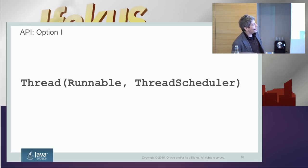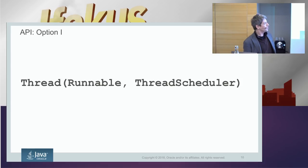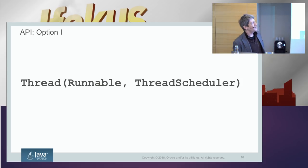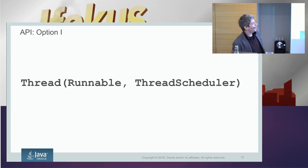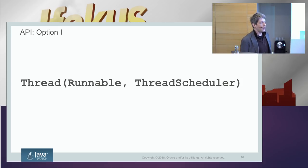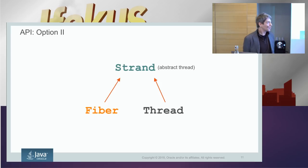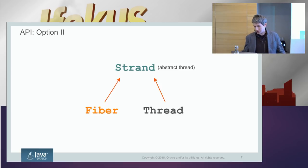We're adding a new kind of thread. One option is to reuse the existing Thread class — and in fact that's the one we're currently leaning towards. If you create a new thread as you normally do today, you get an ordinary heavyweight kernel thread. But you could pass something like a thread scheduler flag saying 'please make it lightweight,' in which case it's going to be a lightweight thread. Another option is a separate class for heavyweight and lightweight threads with a common abstraction called strand.